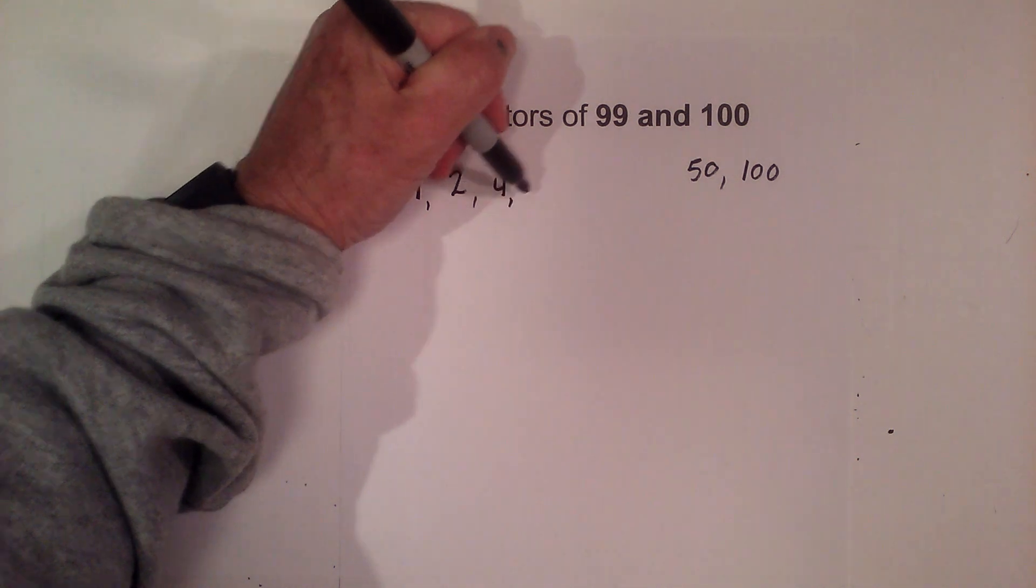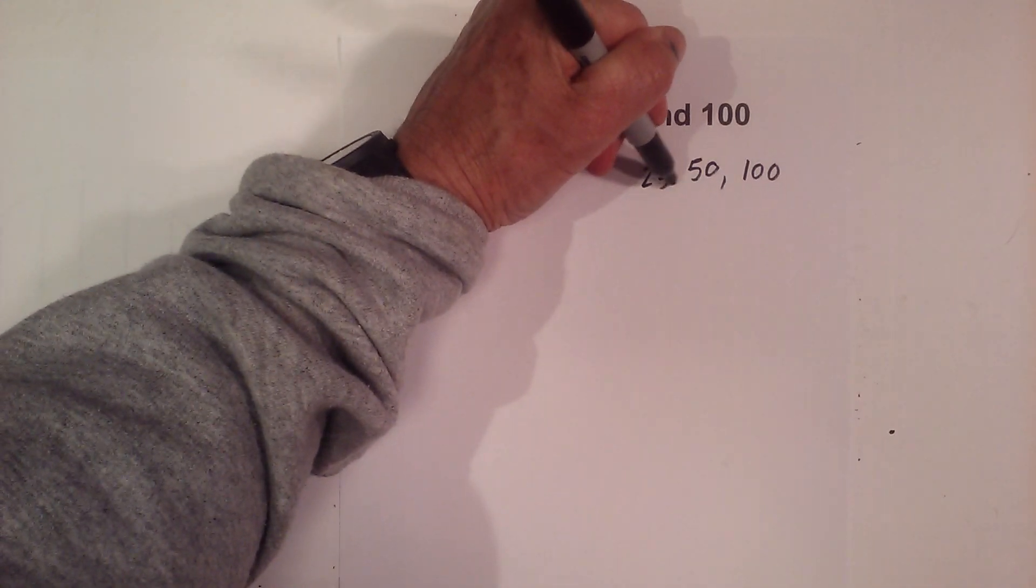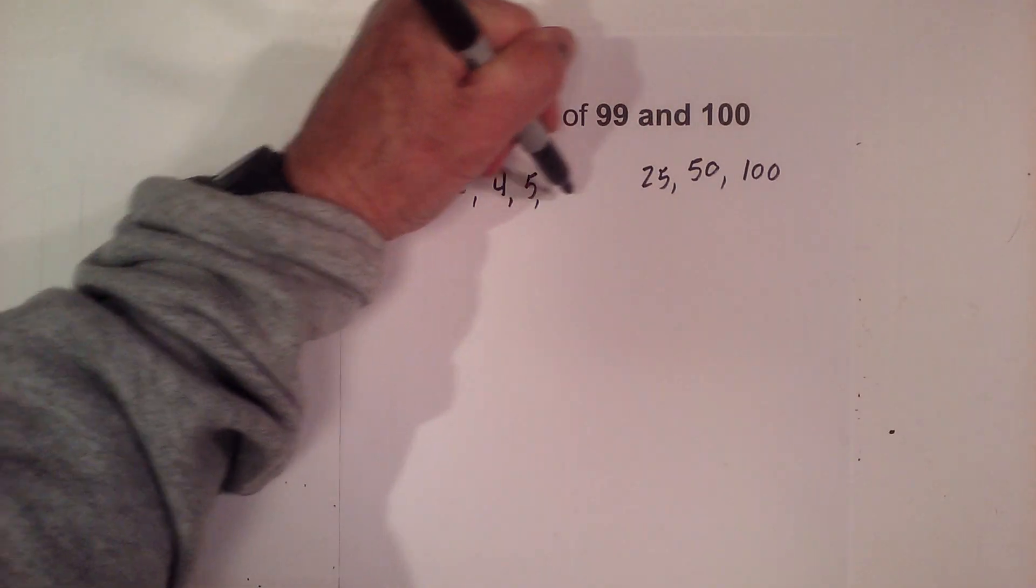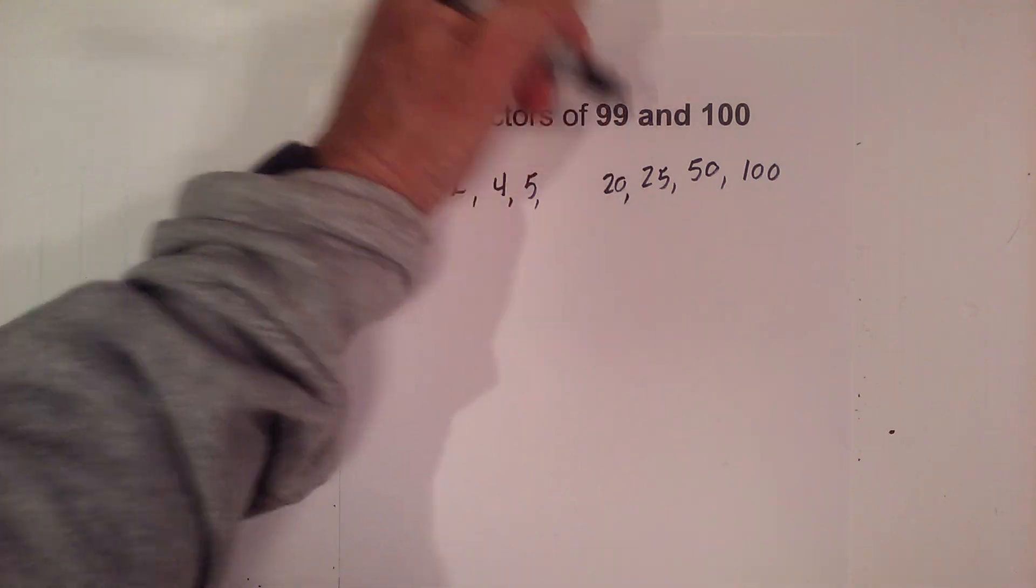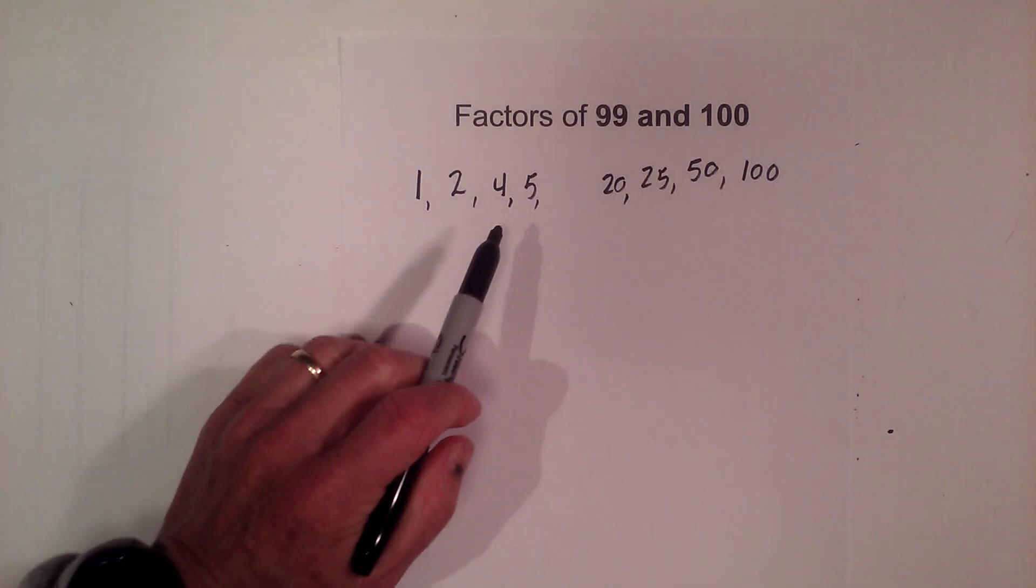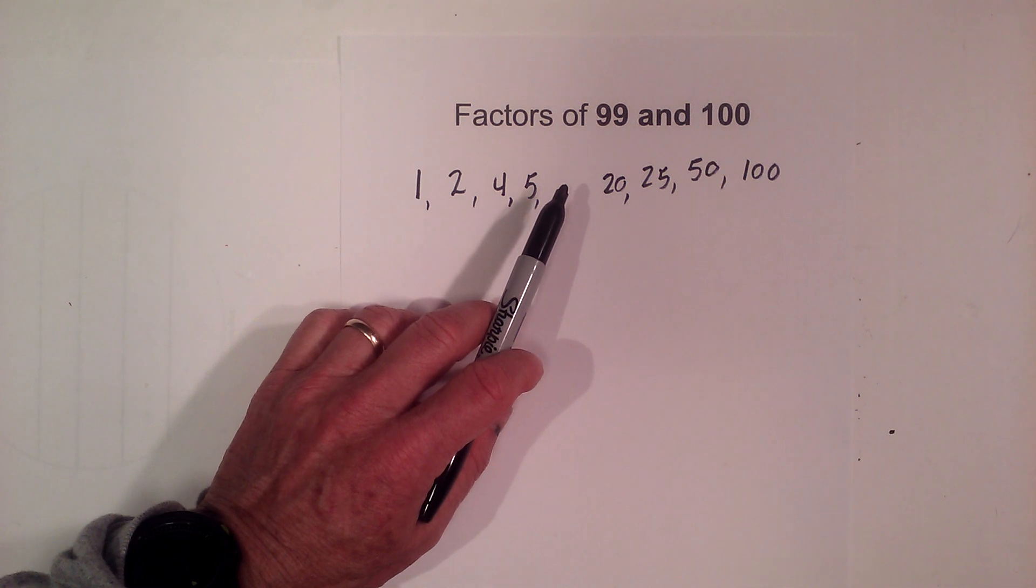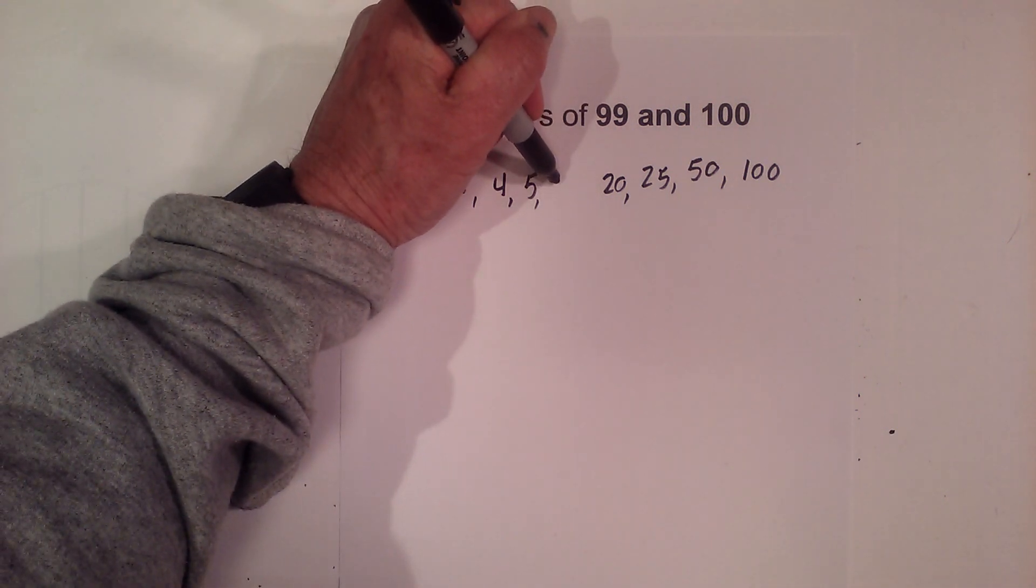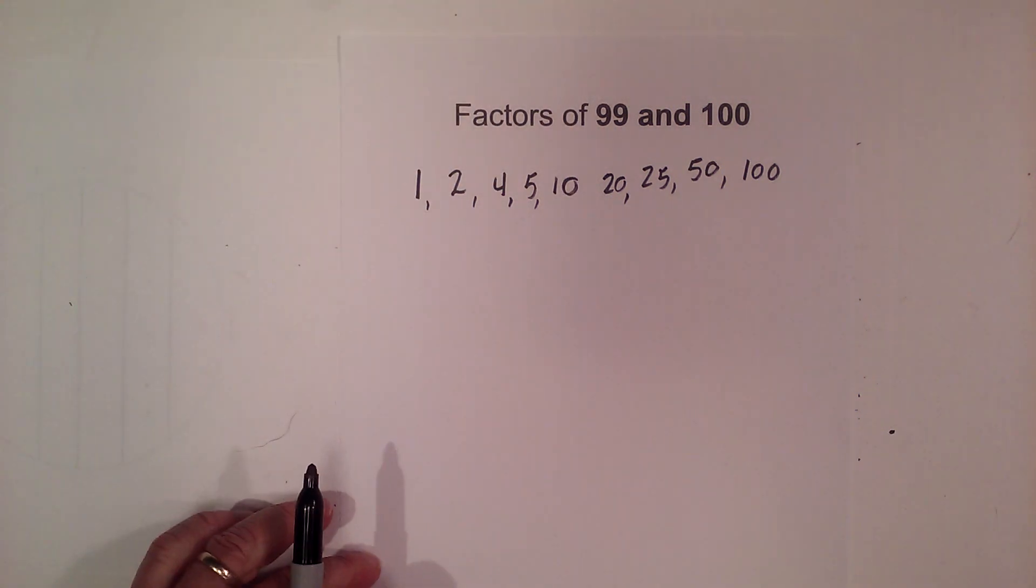can go 4 times 25, 5 times 20, and then 6, 7, 8 or 9 do not go into it but 10 goes into it and it's 10 times 10 so I'm just gonna write the 10 once.